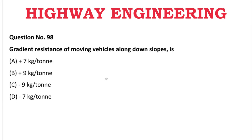Next question: The gradient resistance of moving vehicles along down slopes is — A: +7 kg per ton, B: +9 kg per ton, C: −9 kg per ton, D: −7 kg per ton. The correct answer is C, minus 9 kg per ton.